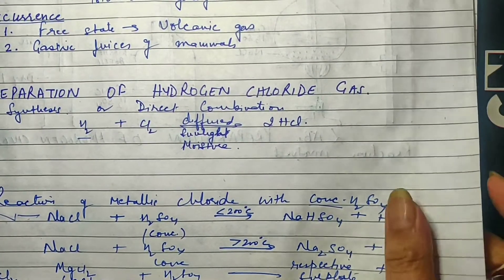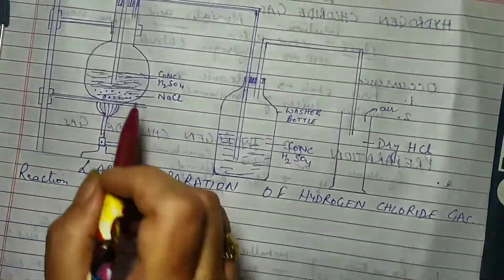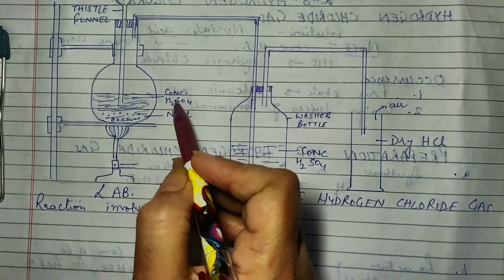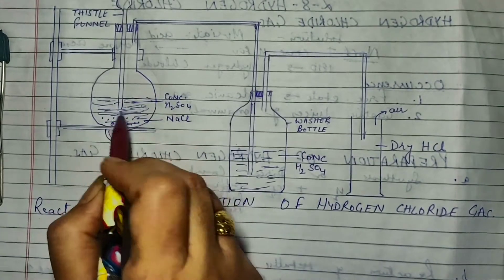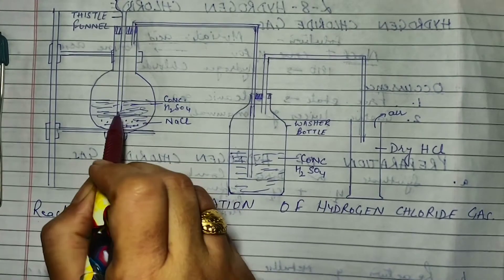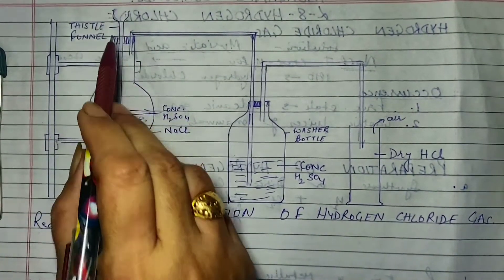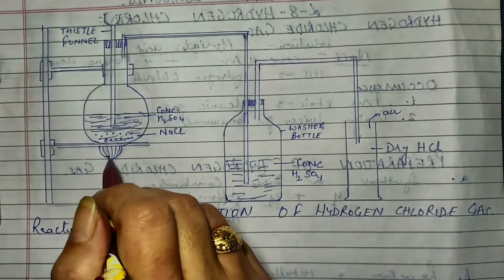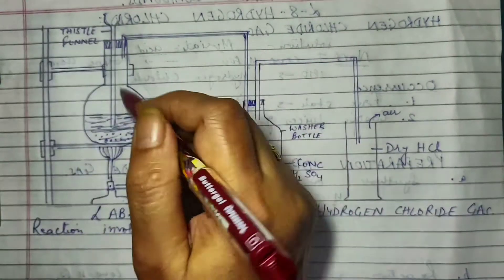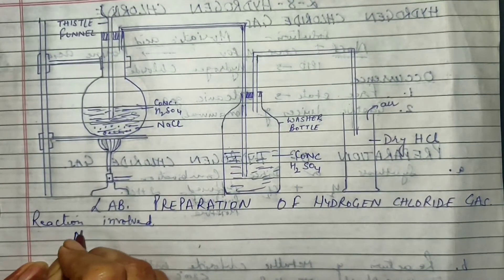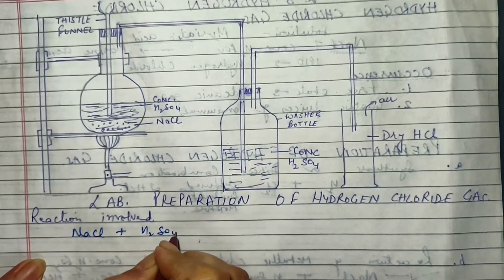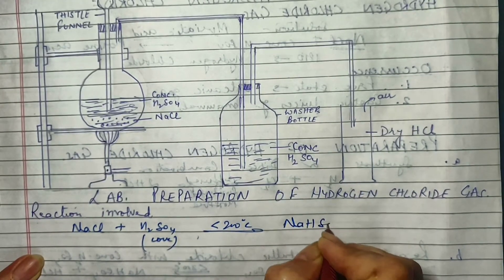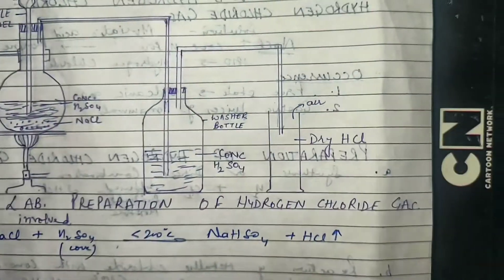Now I will show you the apparatus required. We take a round bottom flask containing NaCl, and with the help of a thistle funnel we pour in concentrated sulfuric acid. We must keep in mind that the lower end of the thistle funnel remains submerged in the concentrated sulfuric acid, otherwise HCl gas will escape from there. We provide some external heat; the reaction begins, and the reaction taking place is: NaCl + concentrated H₂SO₄ at less than 200°C forms NaHSO₄ and HCl.